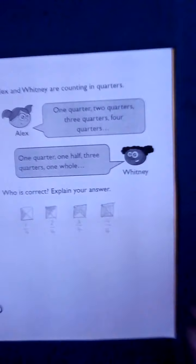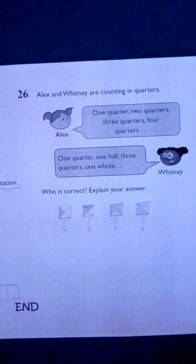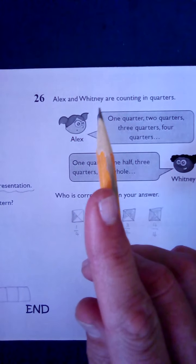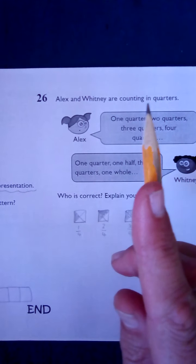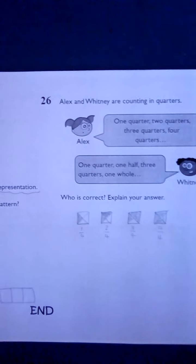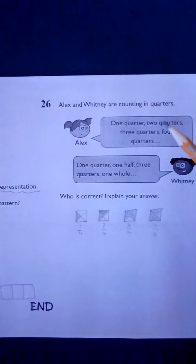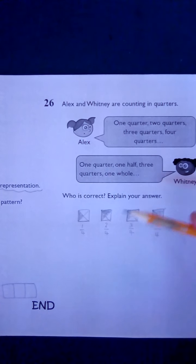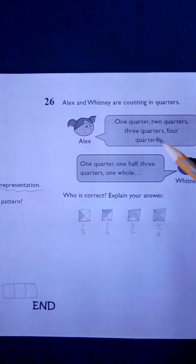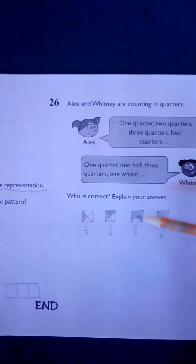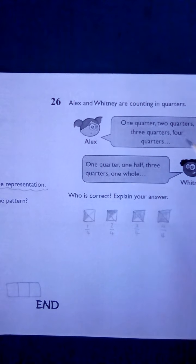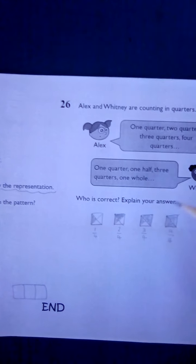Number 26 you can pretty much complete on your own. Alex and Whitney are counting in quarters. One quarter, two quarters, three quarters, four quarters. And then Whitney says one quarter, one half, three quarters, one whole.